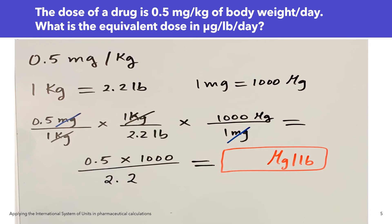Let's look at a problem where we can apply this. The dose of a drug is 0.5 milligram per kilogram of body weight per day. What is the equivalent dose in micrograms per pound per day? I would like all of you to try and solve this problem and let me know your answer in the comments below. If you've made it this far, please like the video, subscribe to my channel, and turn on your notification bell so you don't miss any new videos.